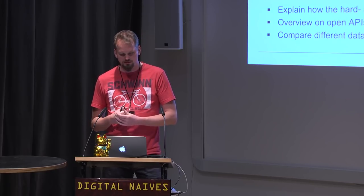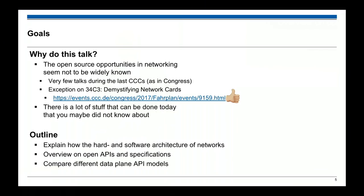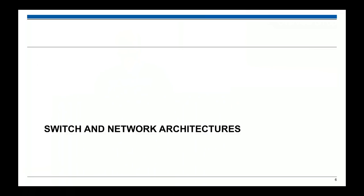There are already some opportunities to use open source in networking today. My impression at recent Chaos Communication Congresses was that there's not much awareness of this, with very few talks on the matter. One exception was 'Demystifying Network Cards' from Paul Emmerich, a really good talk showing that network card specifications had been open for some years, but nobody wrote their own driver until he did. The goal of this talk is to show what you can do today with open source. I'll first give a short introduction on how networks work, then an overview of APIs and specifications, and then go into detail on data plane API models.